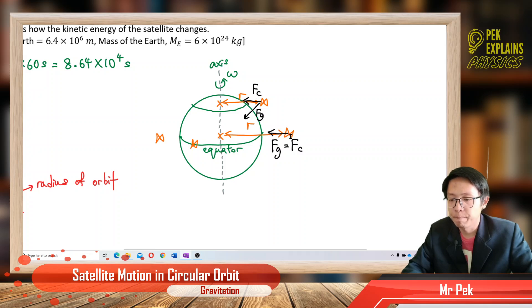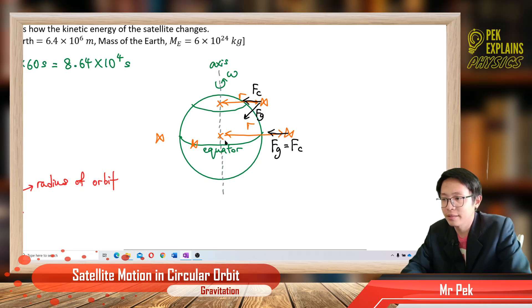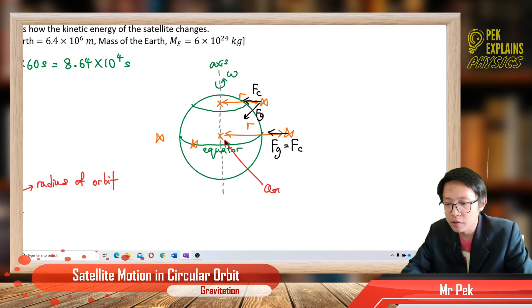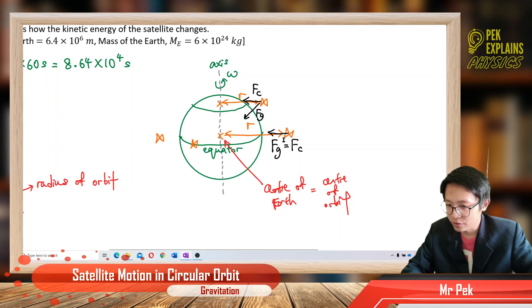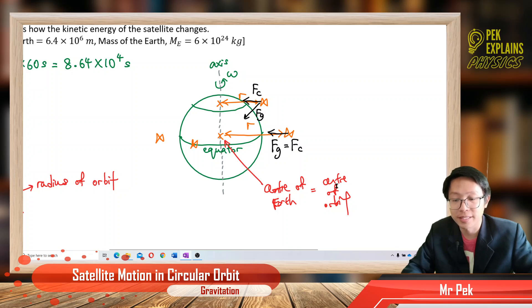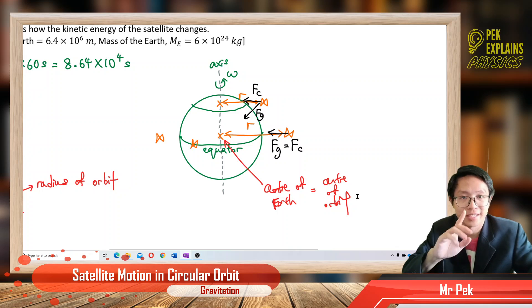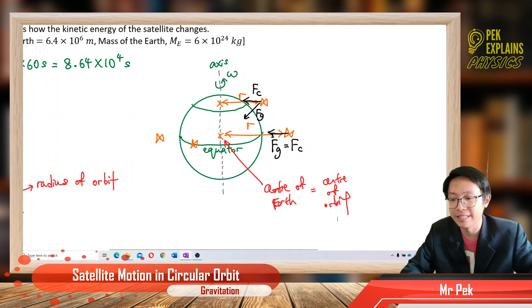The reason is that on the equator, the center of the orbit is the same as the center of the earth. Gravitational force is directed towards the center of the earth, and centripetal force is directed towards the center of the orbit. If the earth and orbit share the same center, then gravitational force equals centripetal force.